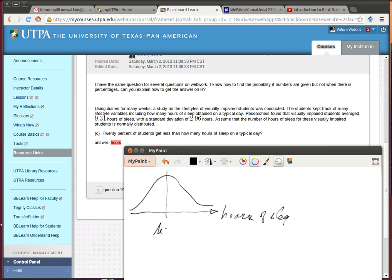We're told that the average, the mean, is 9.31 hours of sleep, and with a standard deviation of 2.96.